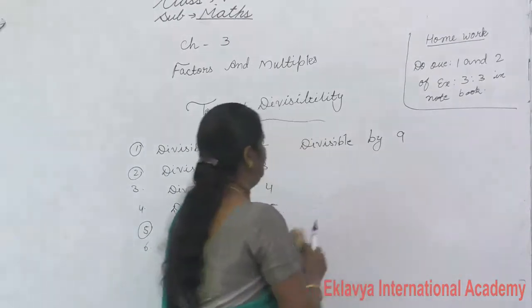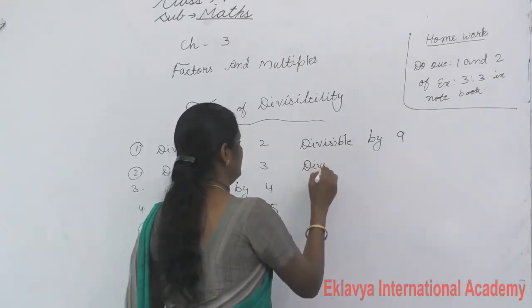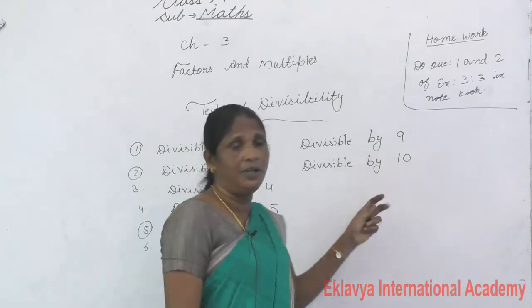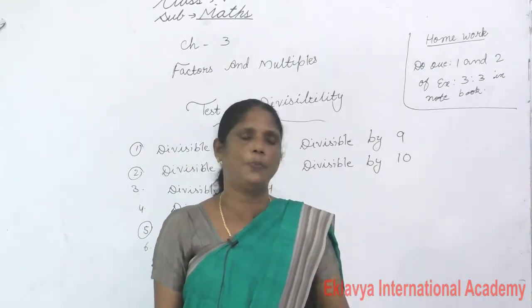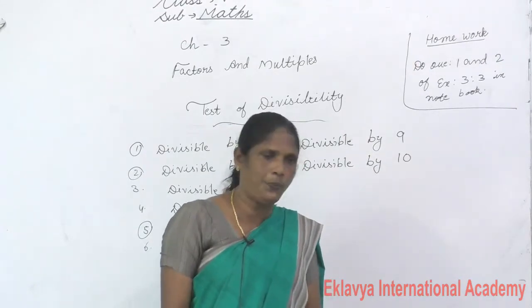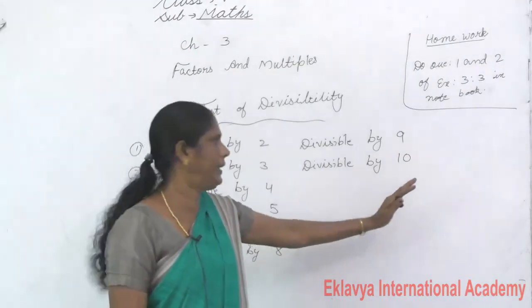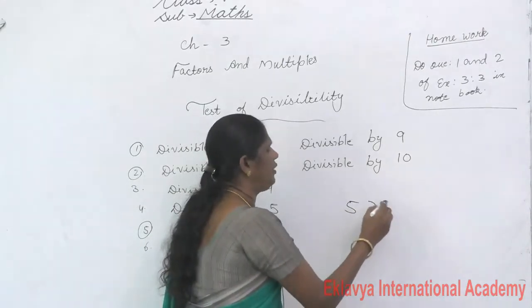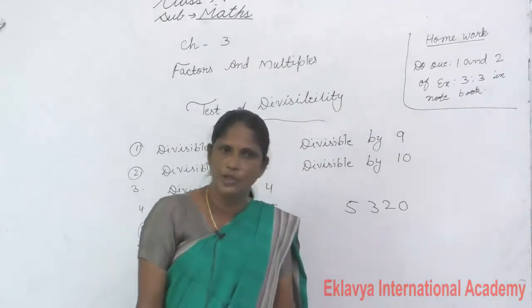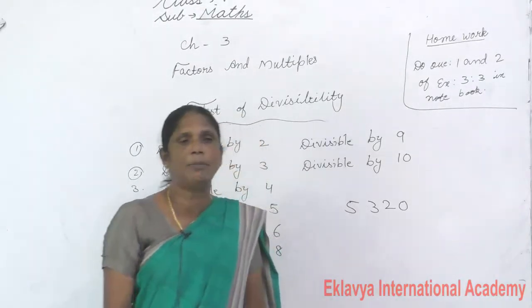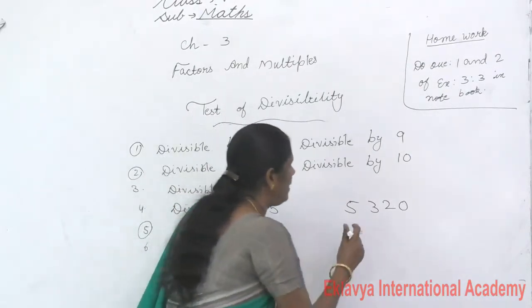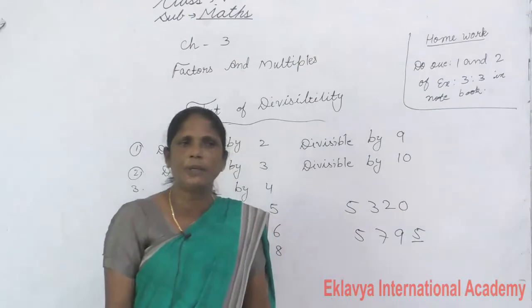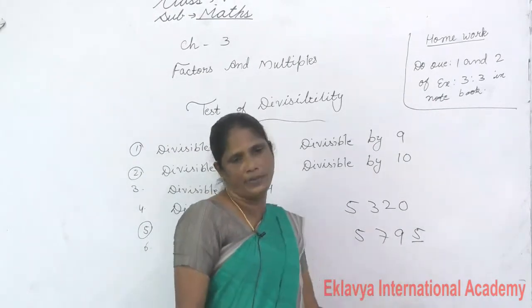Divisibility by 10: if 0 comes in the 1's place, that number is divisible by 10. For example, 5320 — 0 comes in the 1's place, so this number is divisible by 10. Then 5795 — 5 comes in the 1's place, so this number is not divisible by 10.